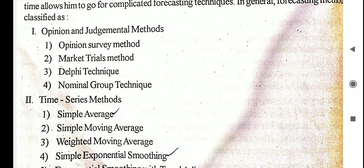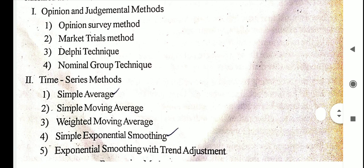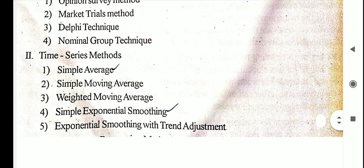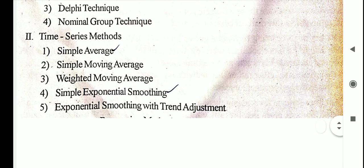In opinion and judgmental methods, the first is opinion survey method, second is market trials method, third is Delphi method, and fourth is nominal group technique. In time series methods, the first is simple average, second is simple moving average, third is weighted moving average, fourth is simple exponential smoothing, and fifth is exponential smoothing with trend adjustment. This is the classification of forecasting methods.